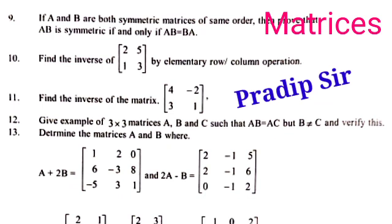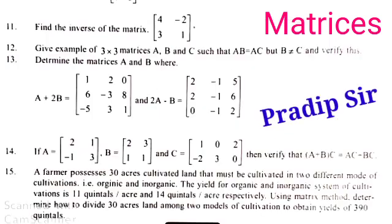Next is the inverse, also in a question, and the inverse with elementary operations. Then is the product AB and AC where B is not equal to C. There is a question with A plus 2B, and you have to find the two matrices A and B — simply apply the algebraic method. Next, question 11 is also on the inverse.